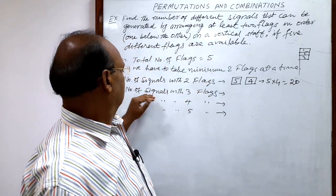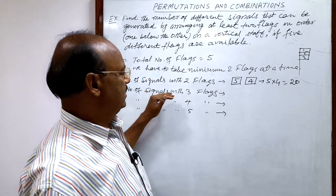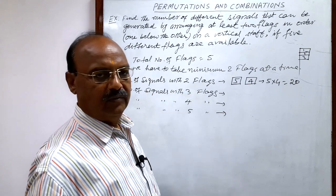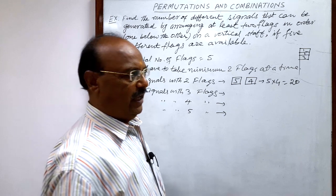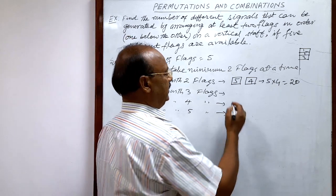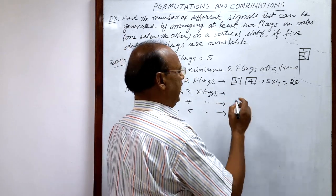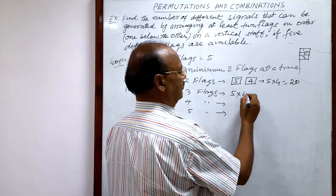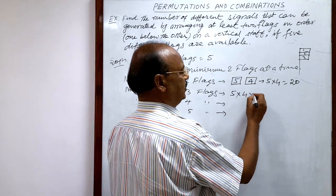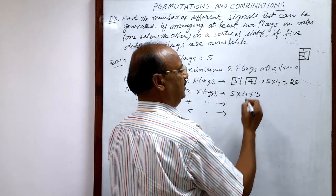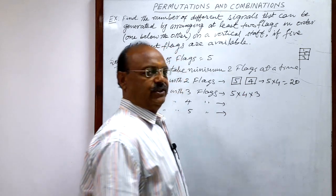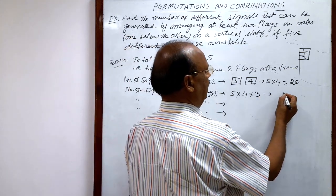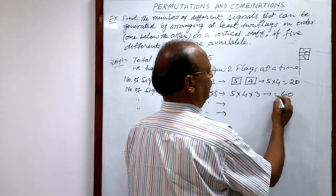Similarly, when forming signals with three flags, the first flag can be selected in five ways, the second in four ways, and the third in three ways. So the total number of signals with three flags is 5 × 4 × 3 = 60.